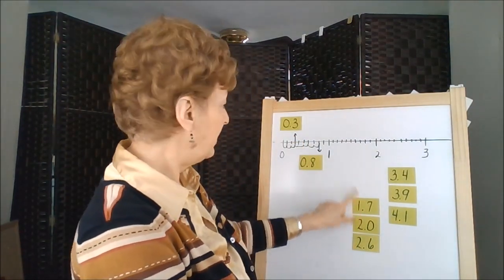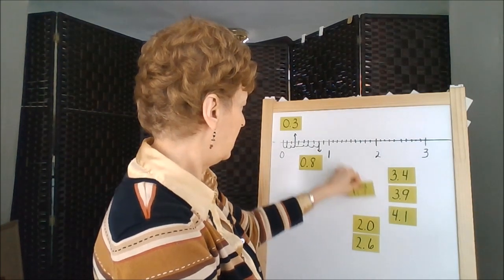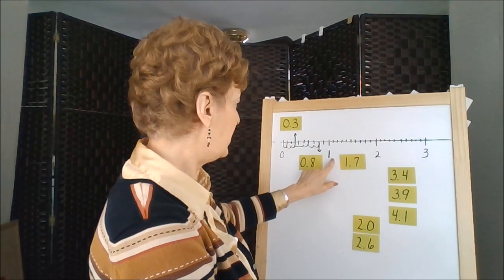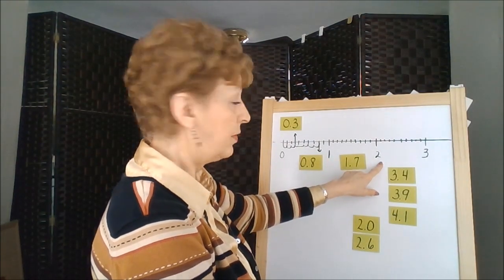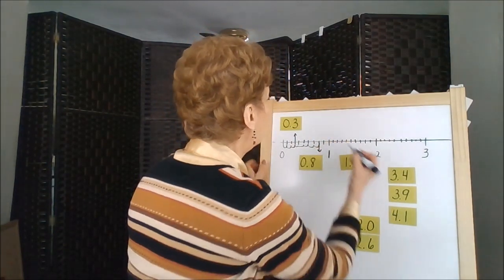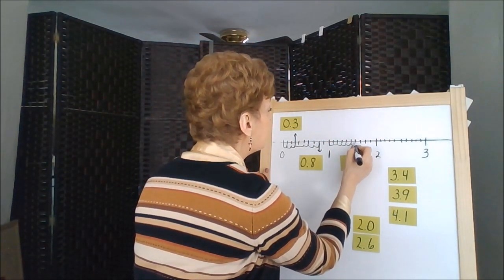1.7 is in this next decade. The one tells us that this number comes between the one and the two. Those are the marks on the ruler. One, two, three, four, five, six, seven.